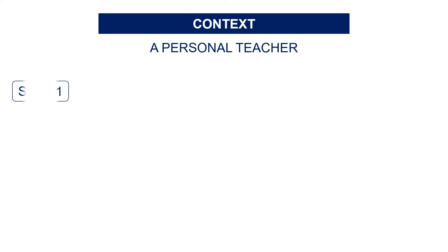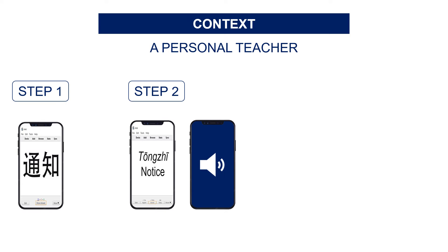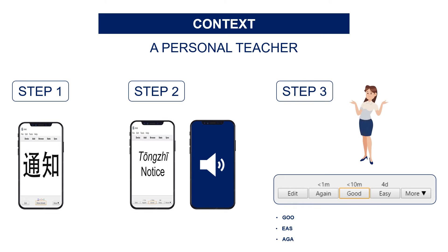The idea is to use Anki for self-assessment and repeat cards until you have the right answers — a process in three steps. Step one: Anki shows you the Chinese character (or French, English, German — depending on the language) and you try to guess the translation in English, for example 'notice' like an official notice of office closure. Then you see the phonetic transcription using the Pinyin system used in mainland China — T-O-N-G-Z-H-I with the first tone on O and I — and finally the pronunciation. Then you click and Anki shows you the answers and asks you to assess yourself.